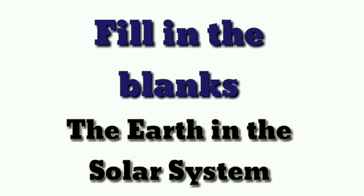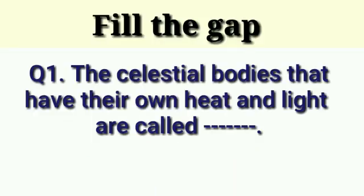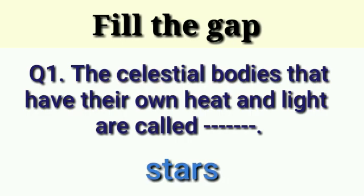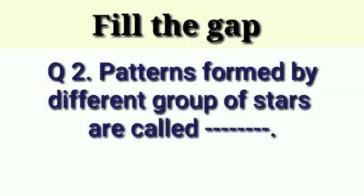So let's start today's video. First question: the celestial bodies that have their own heat and light are called dash. Answer is: stars. Next question: patterns formed by different groups of stars are called dash.